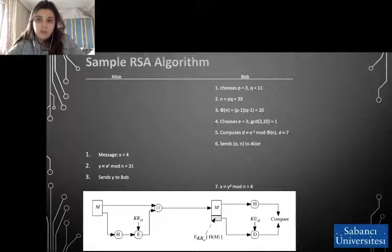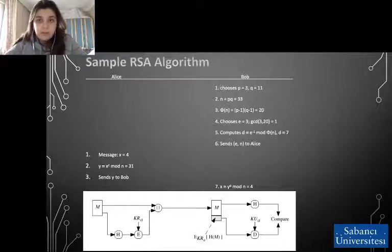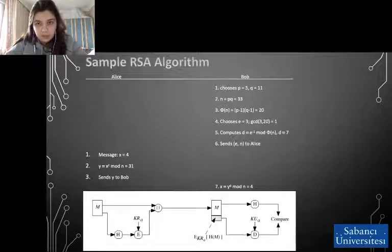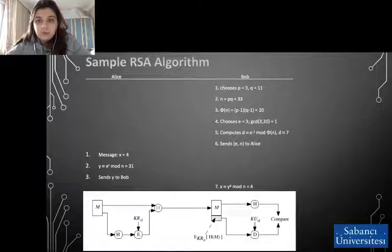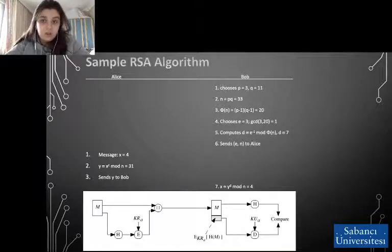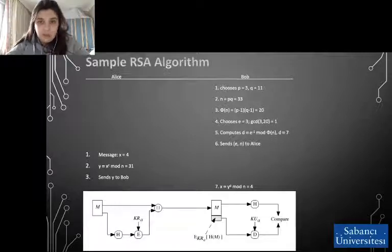After creating the public and private keys, Bob sends e and n values to Alice. Alice receives the public keys from Bob. Alice has a message x = 4, and she encrypts it: she computes y = x^e mod n = 31. She sends the message along with her signature y. Bob receives Alice's message and her signature. He computes x = y^d mod n = 4. If it equals Alice's original x value — which in our case it does — the message was indeed sent by Alice and has not been changed on its way to Bob by a third-party user.